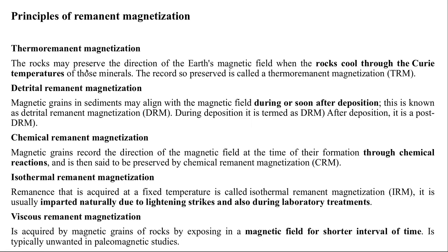There are mainly five types of remanent magnetization principally contributing to rocks. The first is thermoremanent magnetization (TRM): the recording of Earth's magnetic field in rocks by cooling through the Curie temperature of minerals. The second is detrital remanent magnetization (DRM), usually associated with sedimentary rocks, recorded during and sometimes after deposition.